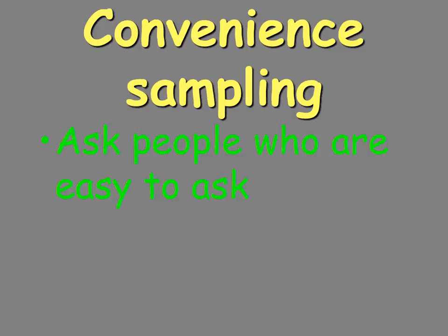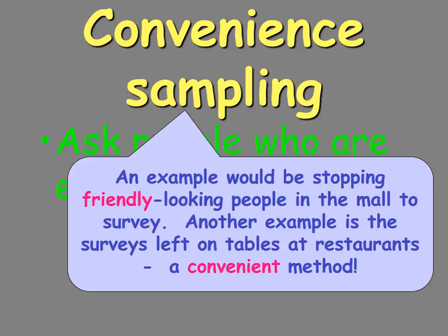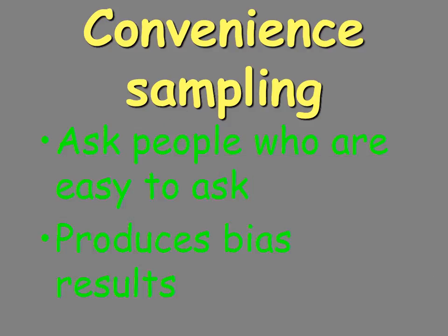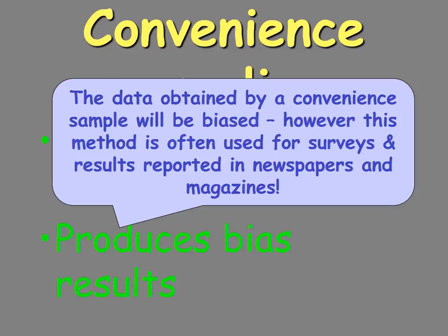Convenience sampling is asking people that are easy to ask. These two almost go hand in hand, because a lot of voluntary response is also a convenience sample. For example, asking the people in your classroom. Most of your survey information gathered for that day-one experiment was a convenience sample — you were just asking people that were easy to get to. This can produce biased responses because you're getting information from easy sources, and that can change the results.